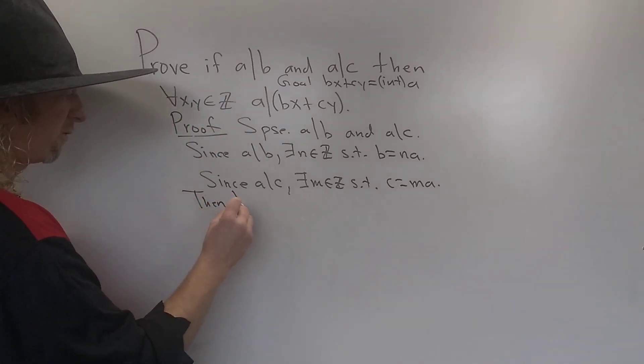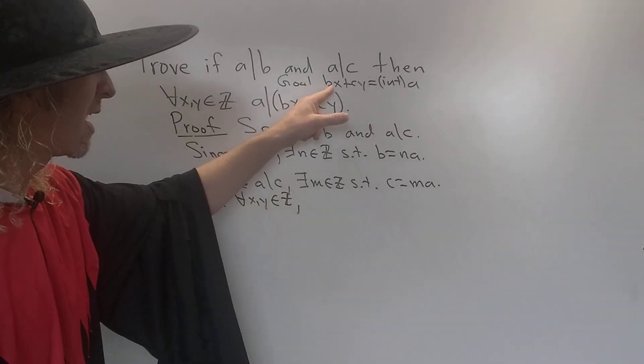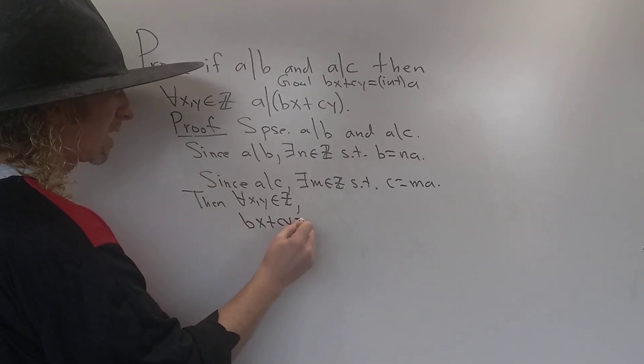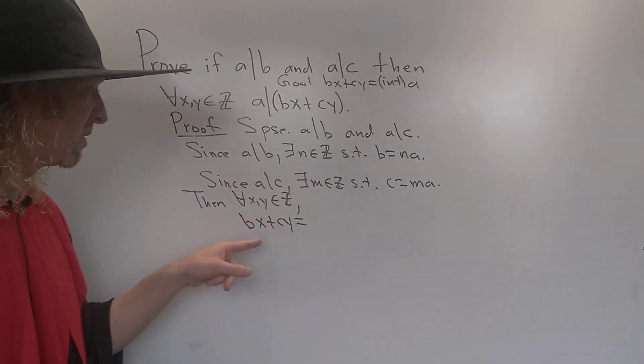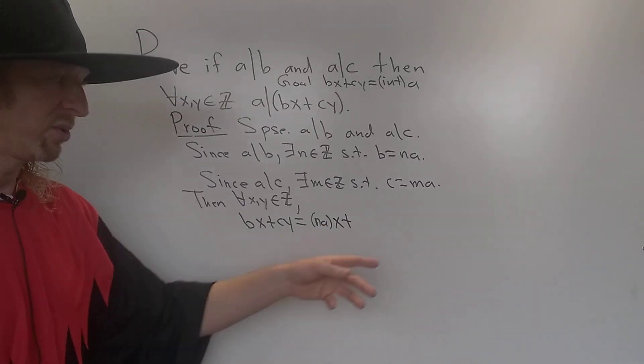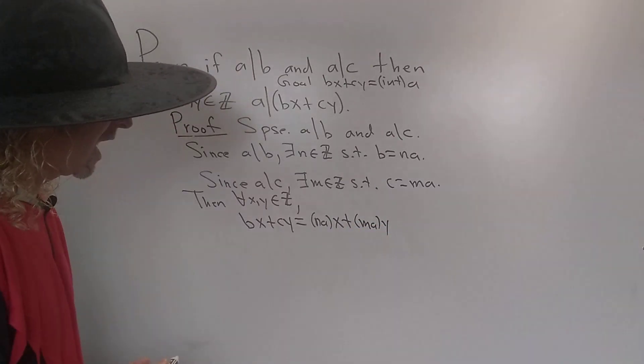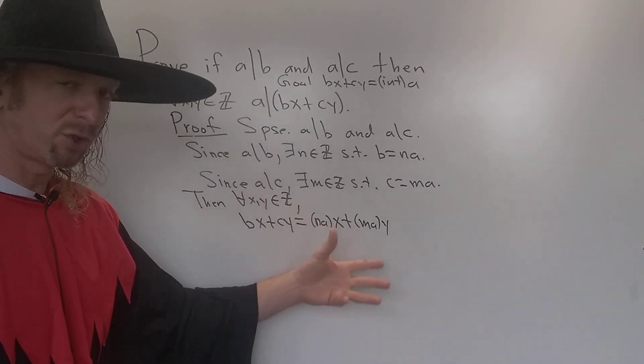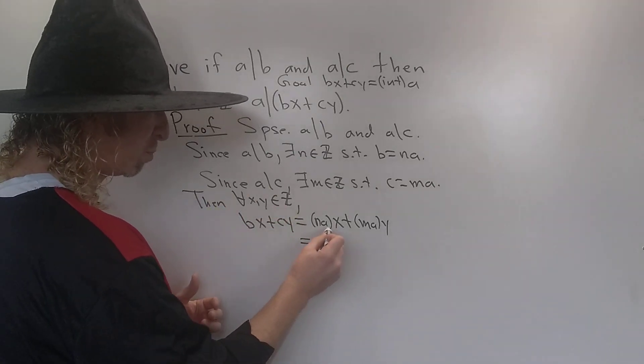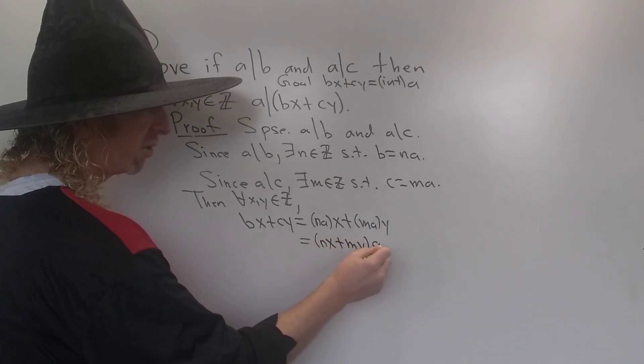So then, for all x, y in Z, let's look at the quantity bx plus cy. This should be an integer times a. So what is b? Well, b is na. So this is nax, plus c, and what is c? Well, c is ma. So this is may. And then we want to write this - we can use some properties here, commutativity, associativity - and you can just pull out the a. You can write this as nx plus my, and you can pull out the a. So why are we doing that? Well, because we want it to be an integer. We want it to be an integer times a.